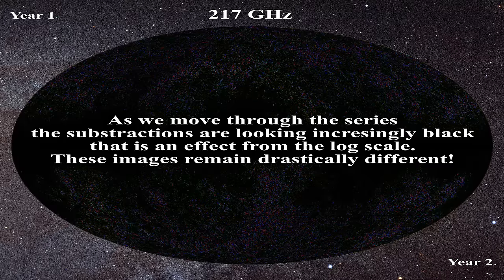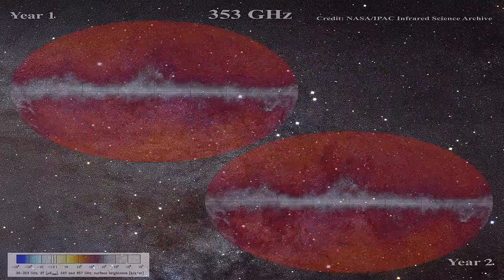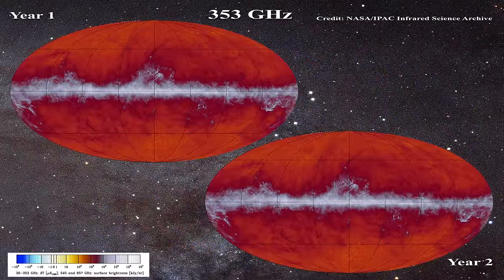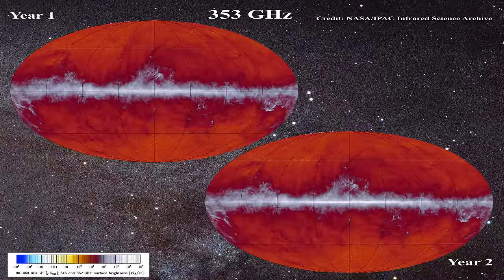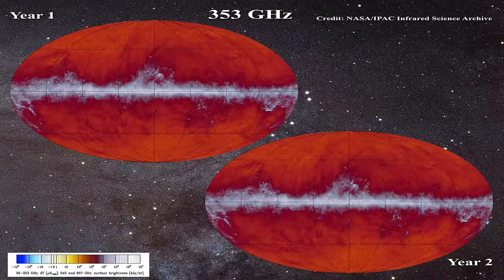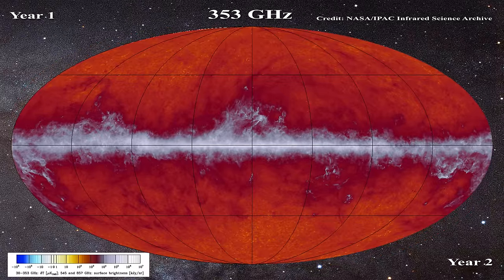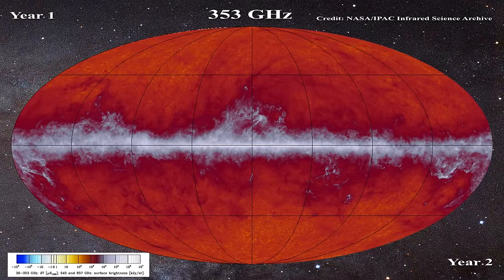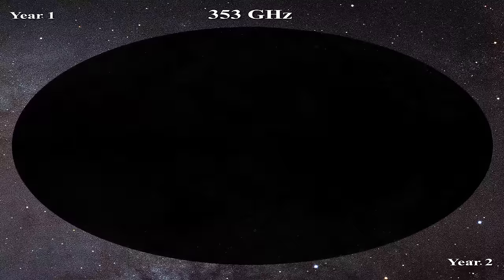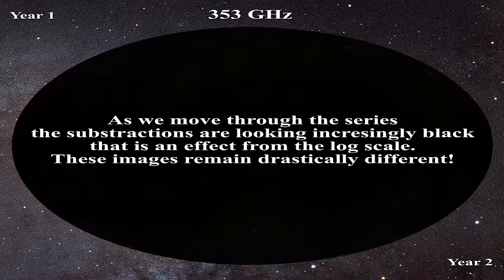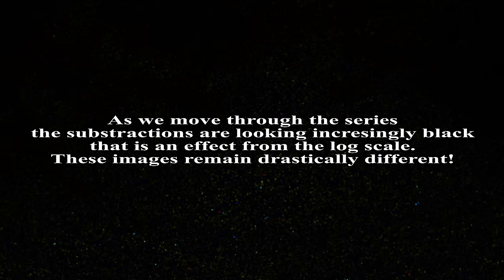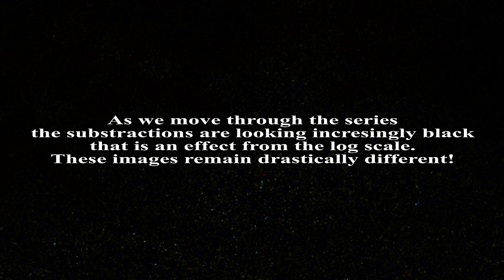Now let us examine 353 GHz. Year 1 and year 2 once again reveal increasing galactic contribution. Next, we move to the overlap, finally to the subtraction. On the surface, this does seem to be better than other images, but if you look closely, you will see that these images do not in fact subtract.